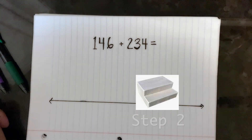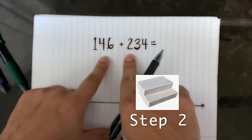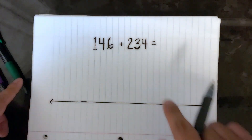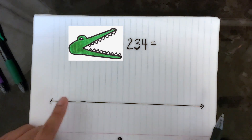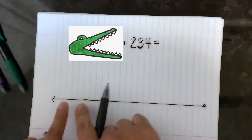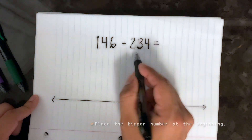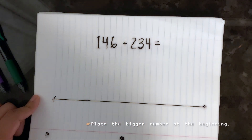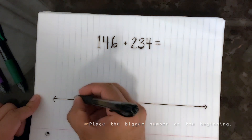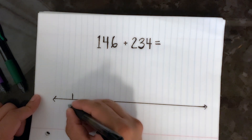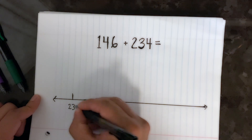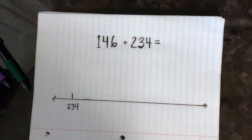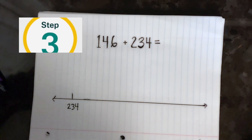Now step two: I want you to take a look at your two numbers and determine which one is bigger. Once you know, I want you to place that number at the beginning of your number line. For example, I see here that 234 is bigger than 146, so I'm going to go ahead and place that right here at the beginning of my number line — bam, just like that.